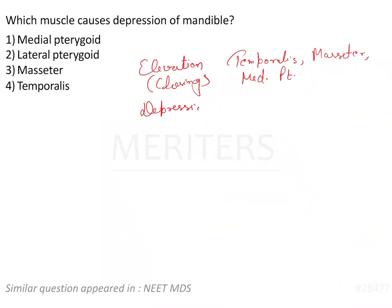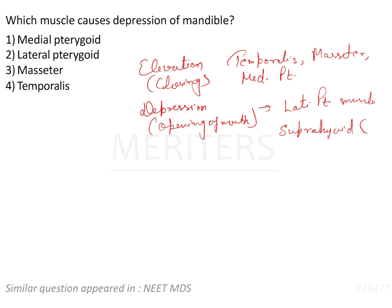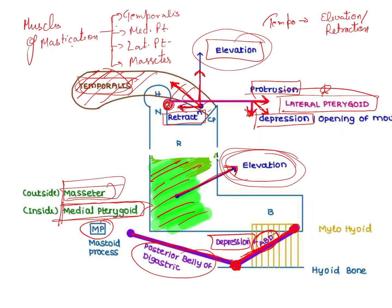If we're asked about depression — meaning opening of the mouth — out of the muscles of mastication, depression is caused by the lateral pterygoid muscle. Additionally, the suprahyoid and infrahyoid muscles also help with depression. The suprahyoid muscles are superior to the hyoid bone, shown here in the figure.